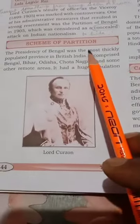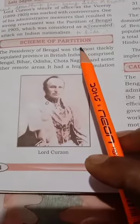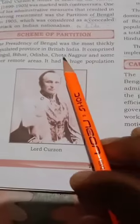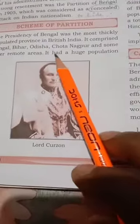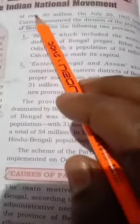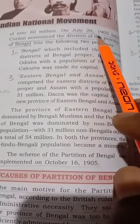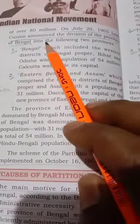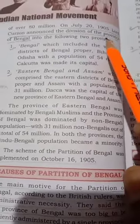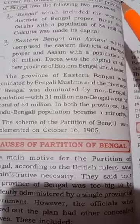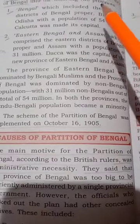Bengal at that time meant present-day Bangladesh, West Bengal, Sikkim, Odisha, and Bihar - all these areas comprised the Bengal province. It had a huge population of over 80 million. On July 20, 1905, Lord Curzon announced the division of the province of Bengal into two provinces: Eastern Bengal and Western Bengal.